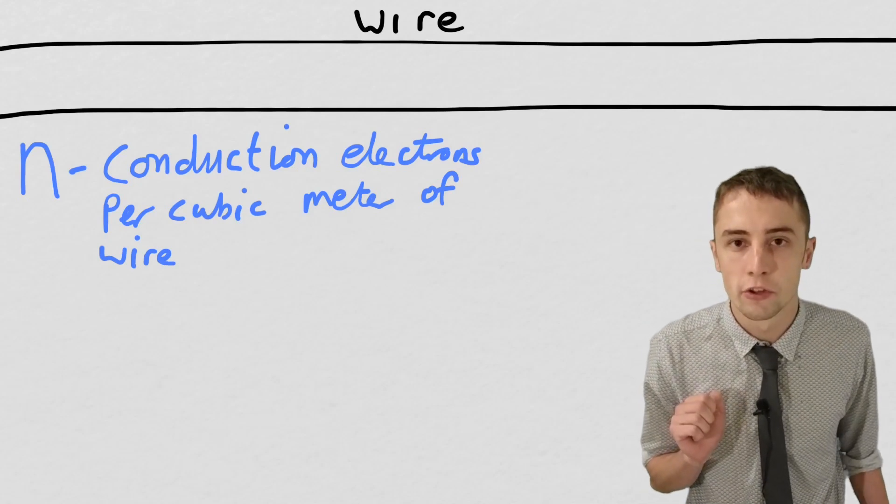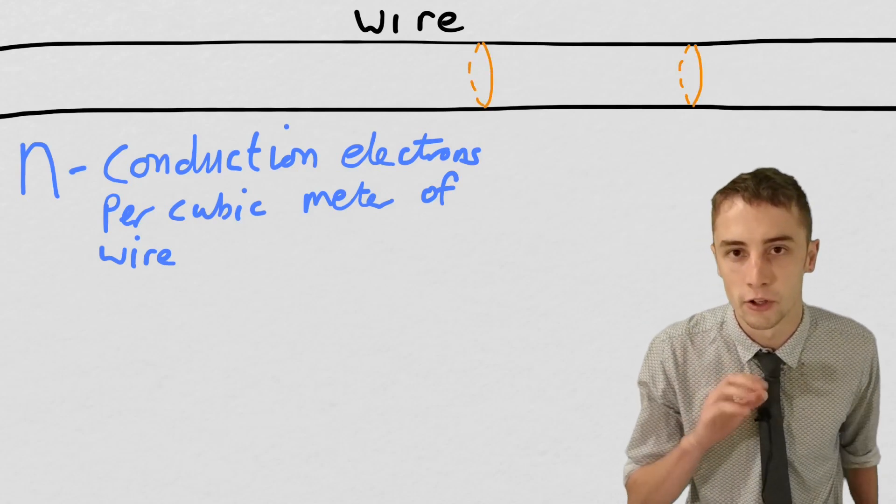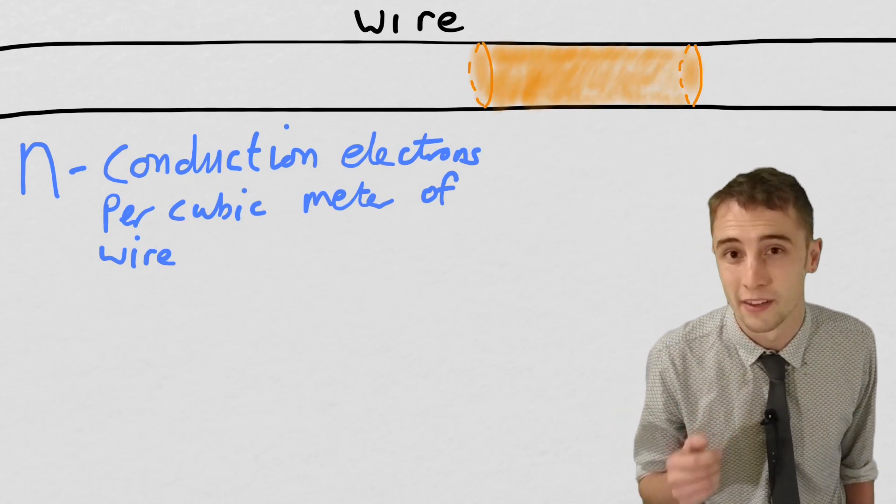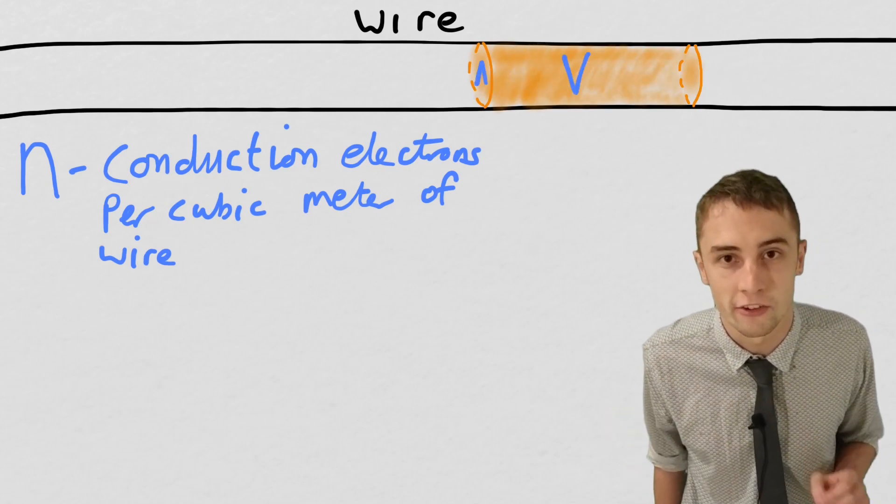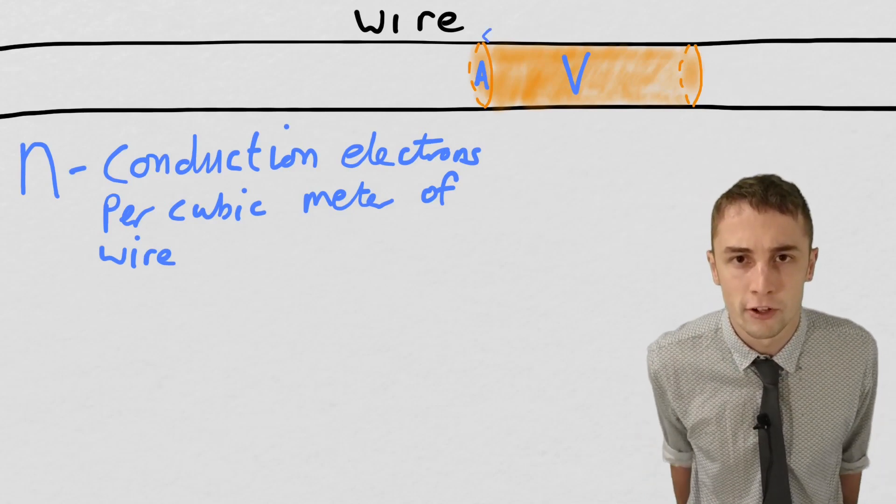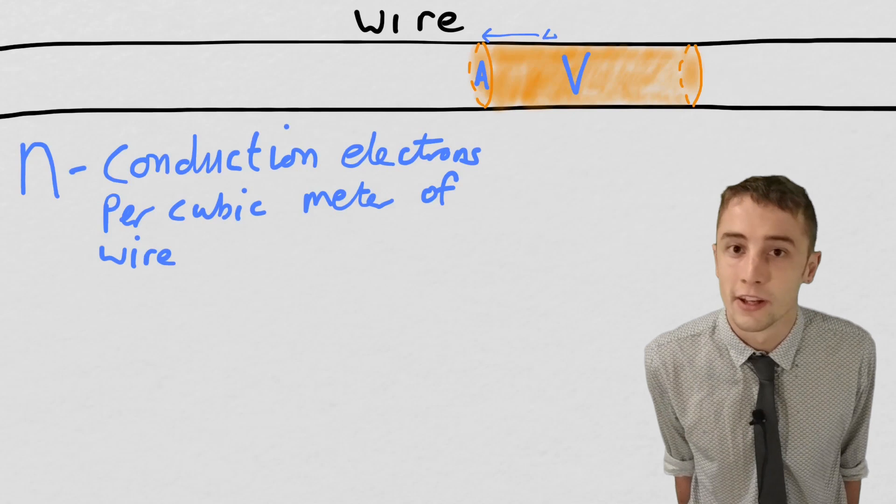Now these electrons are going to move through a volume of this wire. Let's call that volume V, and of course the wire's got a cross-sectional area A.